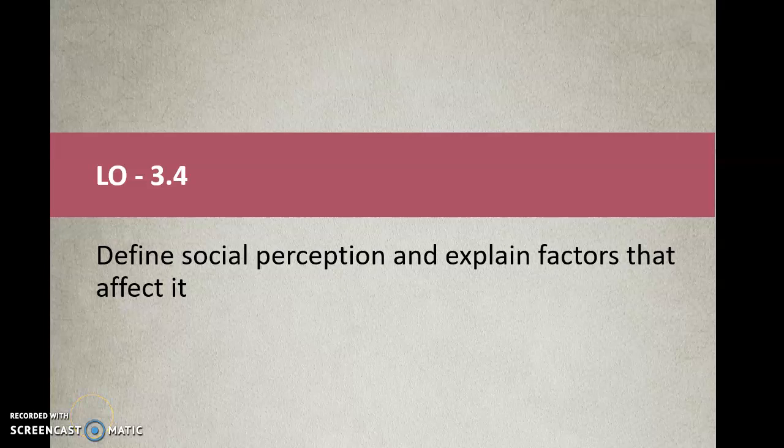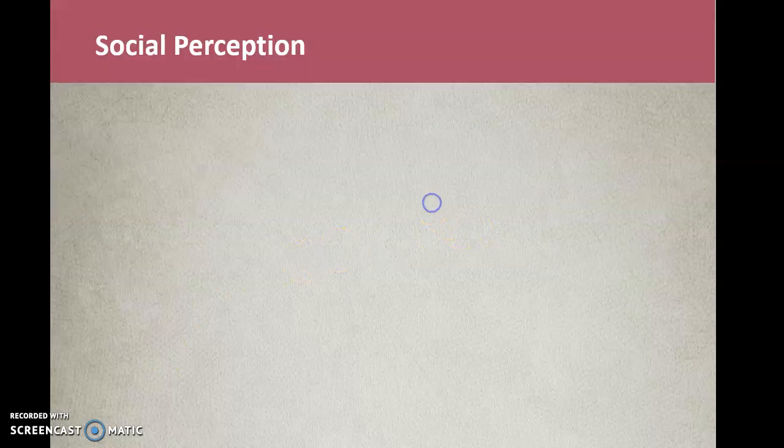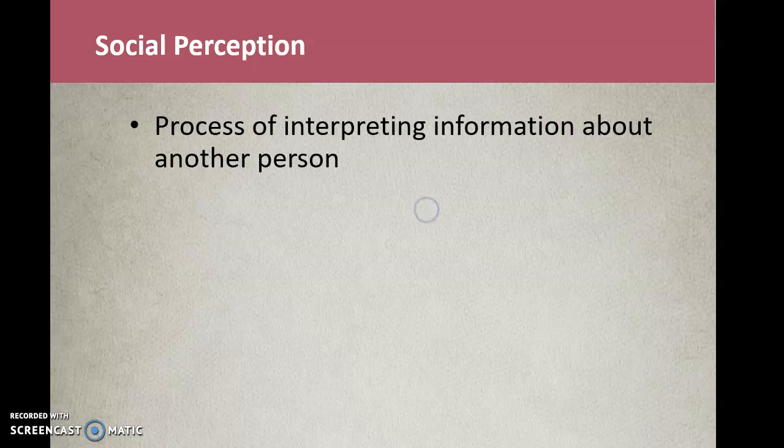This next lecture will define social perception and explain the factors that affect it. Perception is just another psychological process that creates individual differences. Virtually all management activities rely on perception. It would be nice if we all had accurate social perception skills, but we don't.